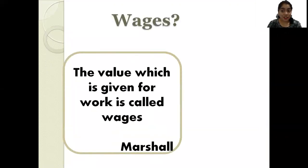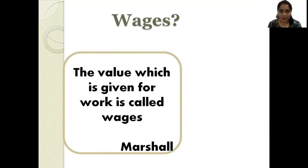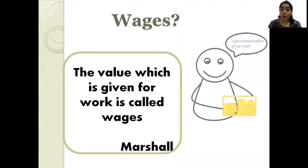According to Marshall, the value which is given for work is called wages. When a person is doing work — whether physical or mental — the amount of money he receives for his work is known as wages. In other words, the payment for work is called wages.